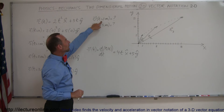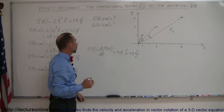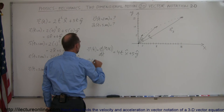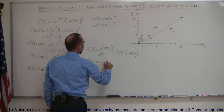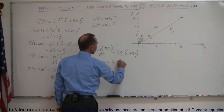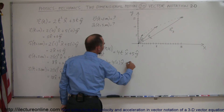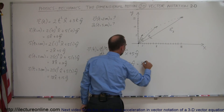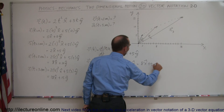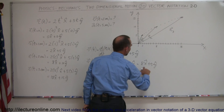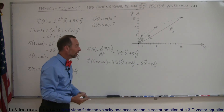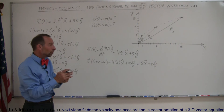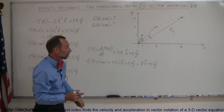To find the velocity at t equals 2 seconds, we evaluate v(2) = 4 times 2 in the x direction plus 5 in the y direction, which gives 8 in the x direction plus 5 in the y direction — so 8 meters per second in x and 5 meters per second in y.